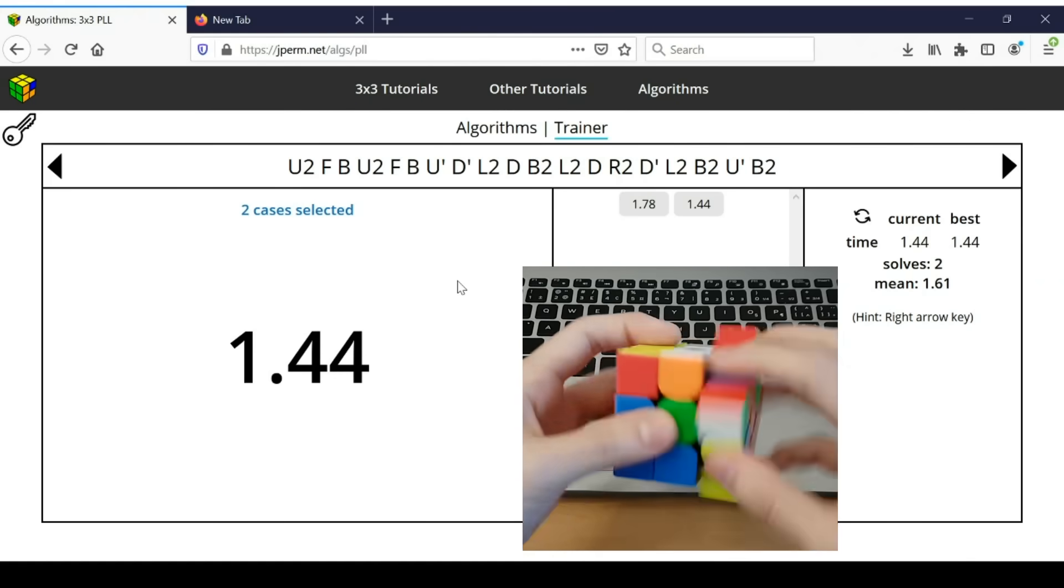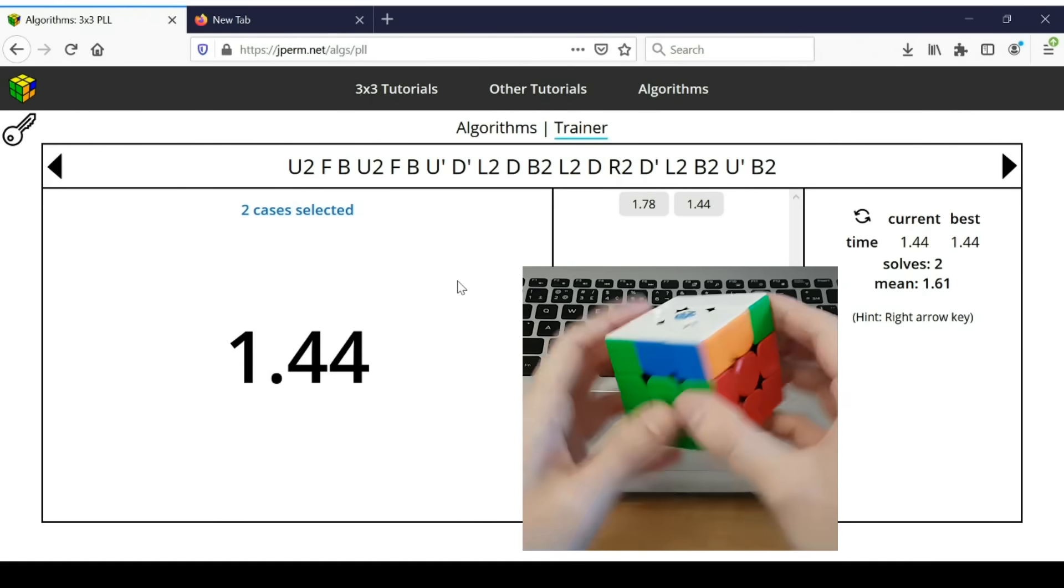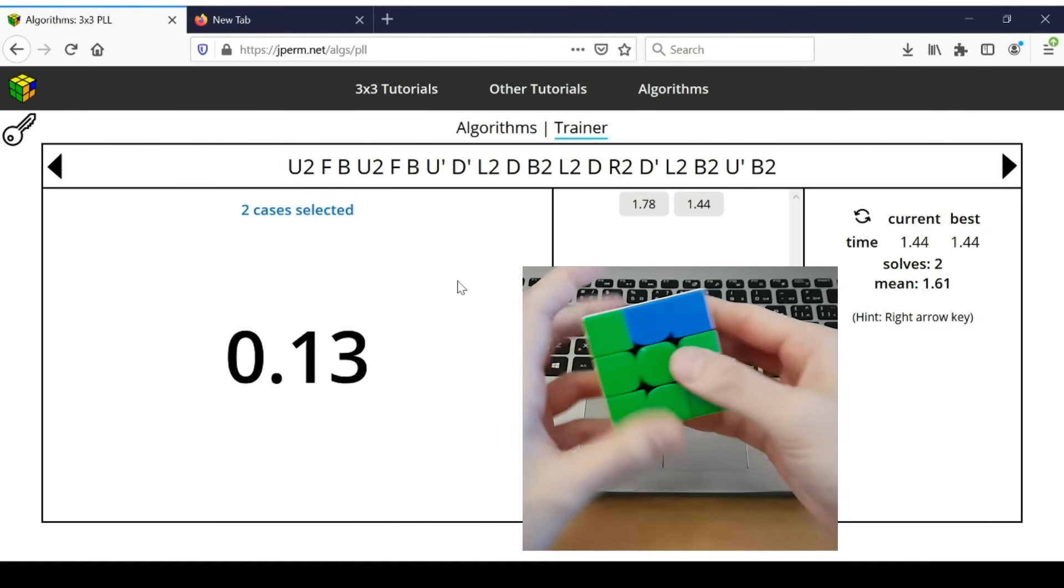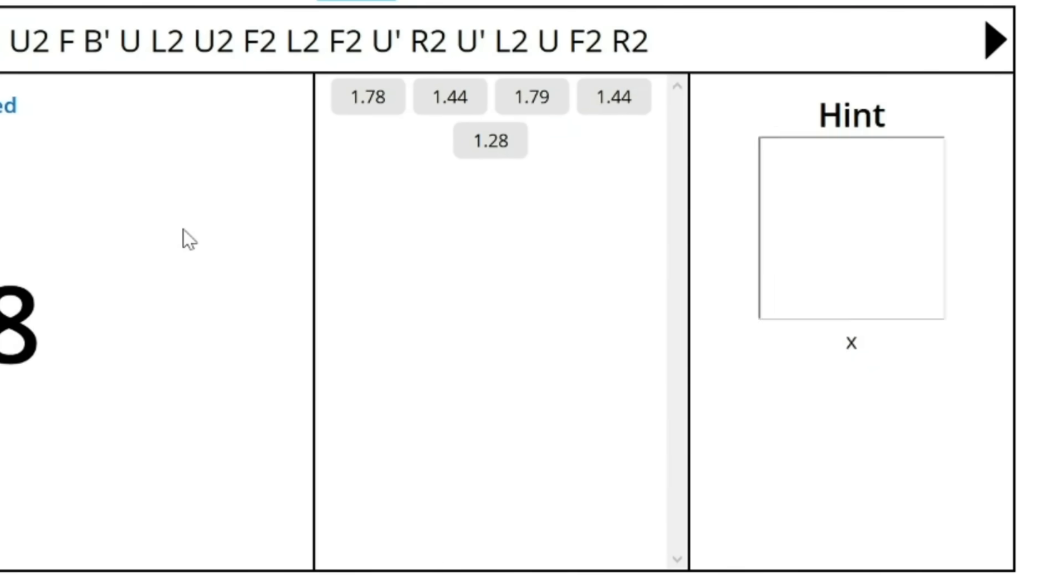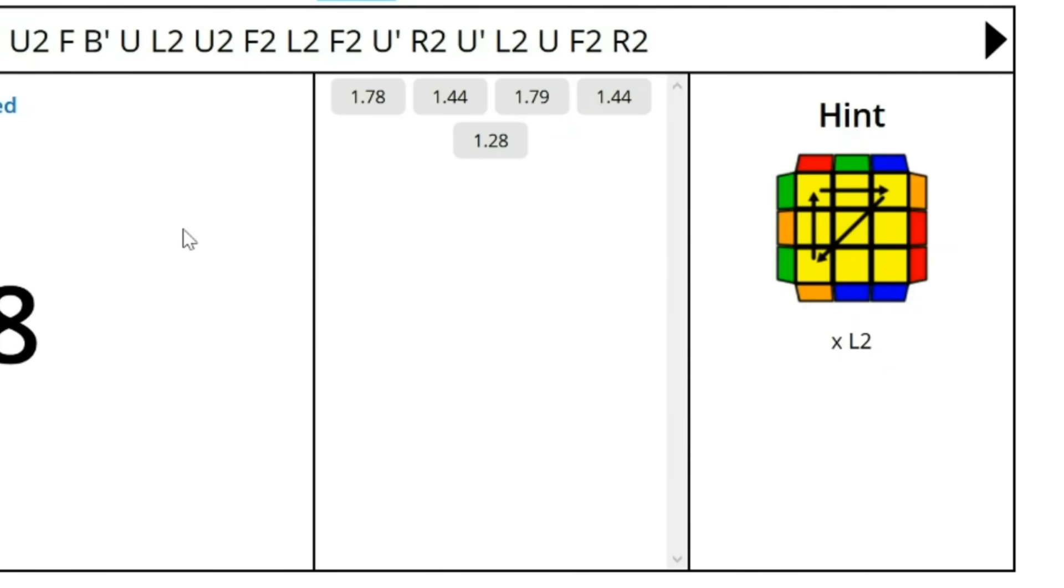That way you can mix them all together and see if you still remember them. Then you just follow the scramble, you get a case, and you're forced to look at it to recall the algorithm. And if you've forgotten an algorithm, you can click the right arrow key, and it shows you what the first move should be. Or if you've forgotten the whole thing, you can keep pressing right, and it shows you the whole thing.